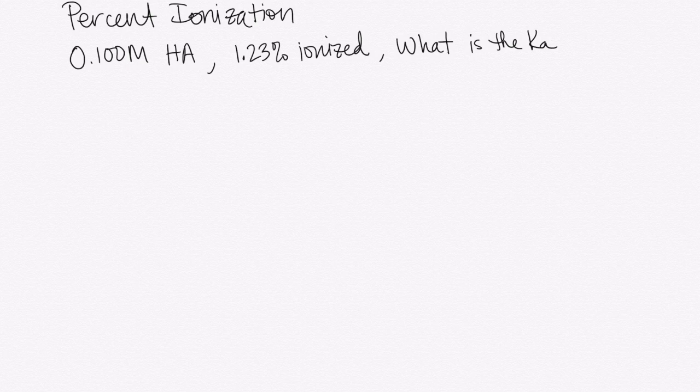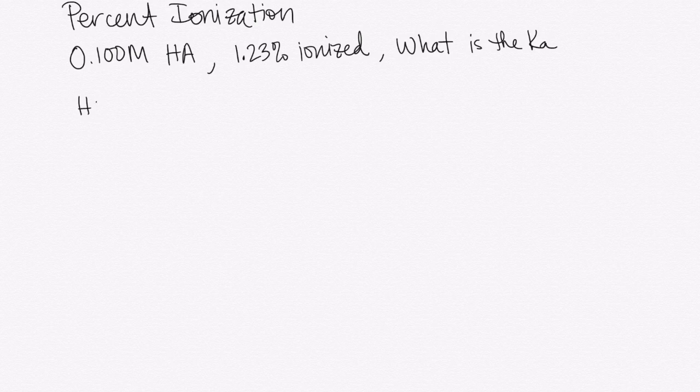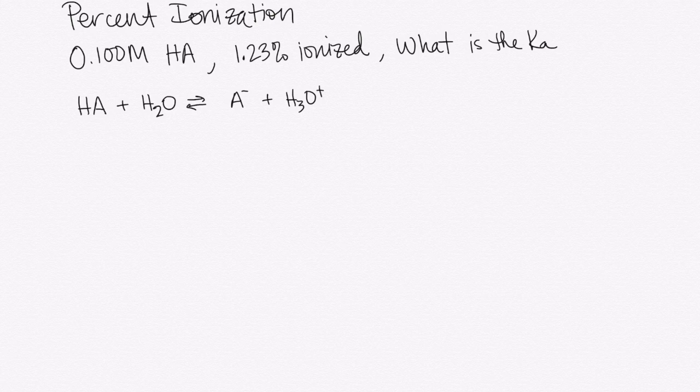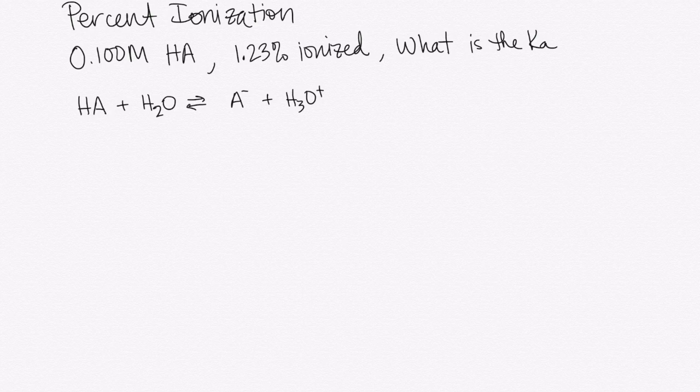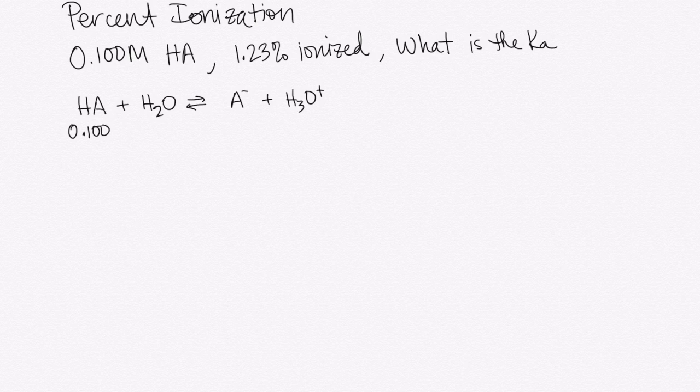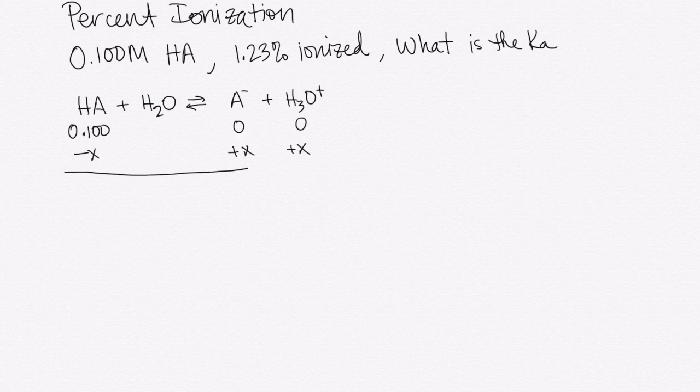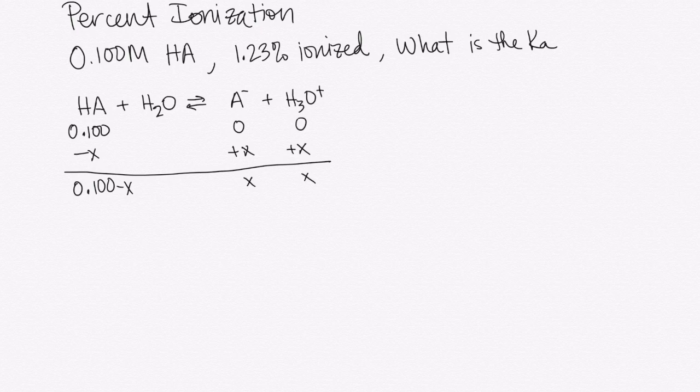So the first thing that we're going to do is make ourselves a little RICE table. We're going to write out the equilibrium expression for the Ka reaction, which is always our acid plus water gives us the conjugate base plus H3O+. And we're going to put in whatever information we have. So we know that we're starting with 0.1 molar of our acid. We know we're going to lose a little bit. We're going to gain a little bit over here. And at the end we have these equilibrium concentrations.